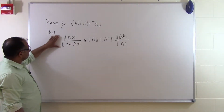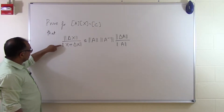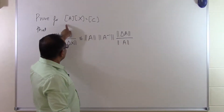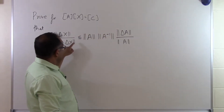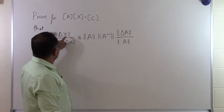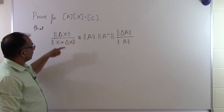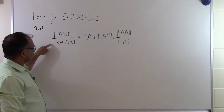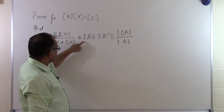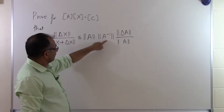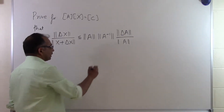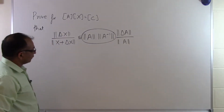In this segment, we will prove this particular theorem which relates the relative change in the solution vector to the relative change we are making in the coefficient matrix, as far as the norms are concerned. The relative change in the solution vector is related to the relative change in the coefficient matrix by the quantity norm of A times norm of A inverse, which is also called the condition number of the square matrix.